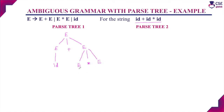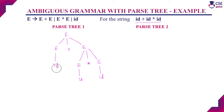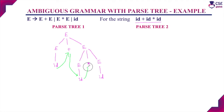We apply the production E → id for both remaining non-terminals. Now we have derived the string id + id * id.